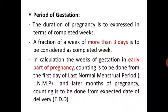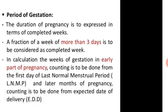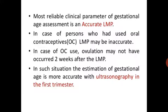Period of gestation: the duration of pregnancy is expressed in terms of completed weeks. A fraction of a week of more than 3 days is to be considered a completed week. In calculating the week of gestation in the early part of pregnancy, counting is done from the first day of the last normal menstrual period. In the last month of pregnancy, counting is done from the expected date of delivery. The most reliable clinical parameter of gestation in the early part of pregnancy is an accurate last menstrual period (LMP).